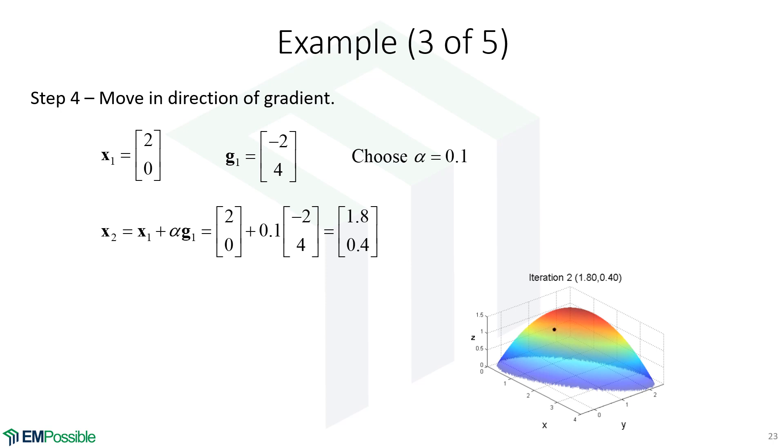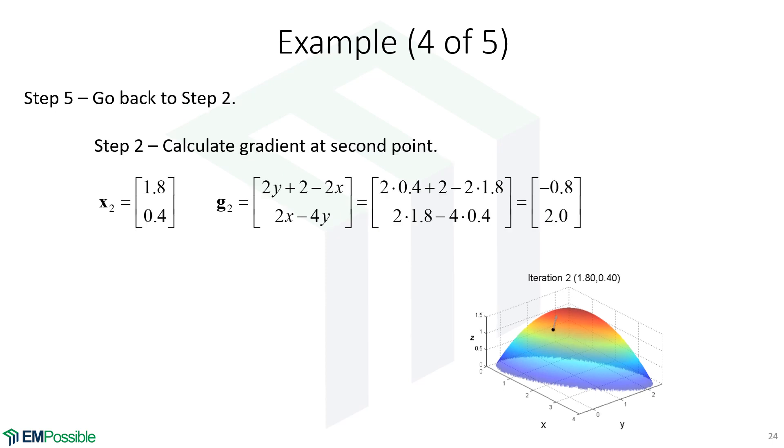And we'll start all over. Remember, we'll calculate the gradient, move in that direction, and keep going until the gradient becomes small enough that we know that we're stopped and we're near the top. So we calculate the gradient at the second point. So here's our expression for gradient. We throw in these values for x and y, and we calculate the gradient. And here I'm plotting the gradient. The gradient is smaller than it was the first iteration, but it's not small enough to stop. So we keep going. We're still not done.